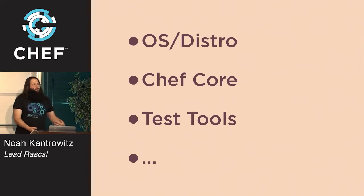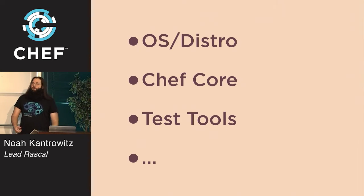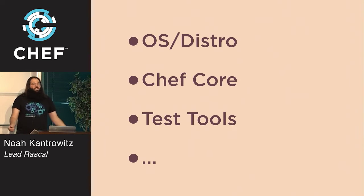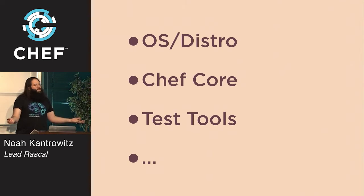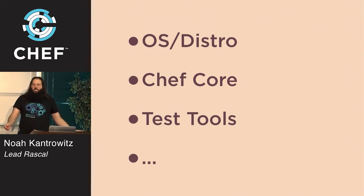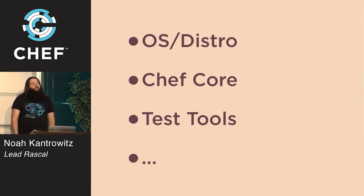Lieutenants map to components. Components are not specific subfolders or repositories — they're conceptual. There are components for OS-specific code, like FreeBSD, Windows, and CentOS. There's also a generic component called ChefCore, which is everything that doesn't fall into the others. There are components for major test tooling repos like ChefSpec and TestKitchen. We're slowly rolling this out over the community. If you think something should be a component but isn't recognized, you should talk to Adam and the rest of the lieutenants and make your case — if they agree, you can be the lieutenant of that thing.